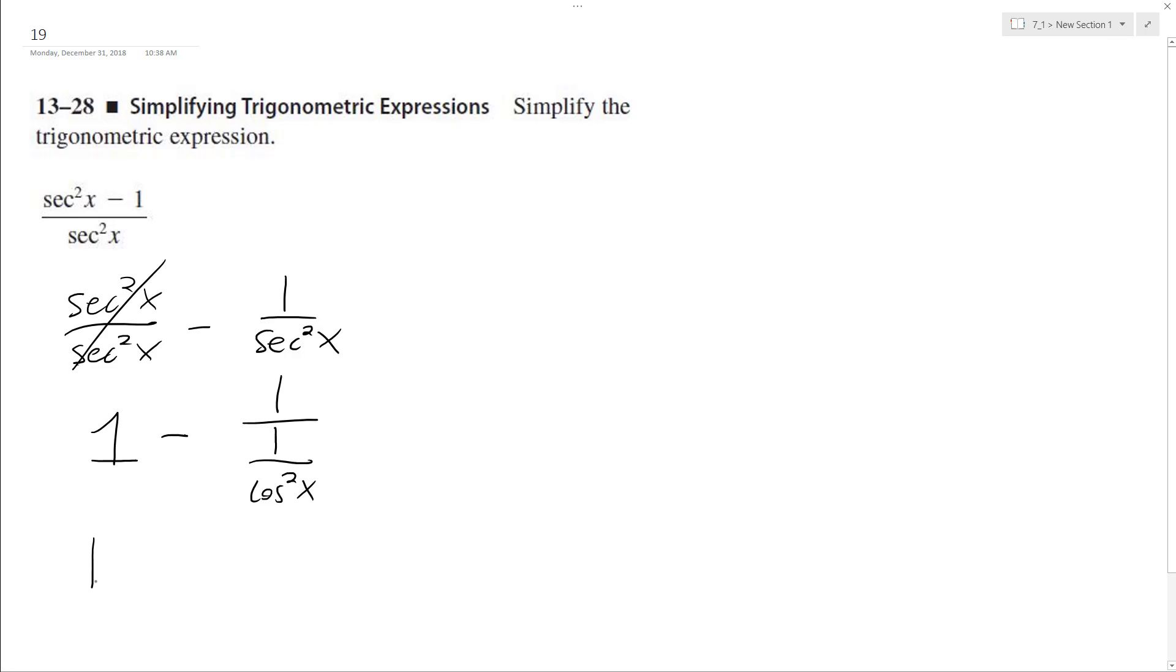And I can rewrite that as 1 minus 1 times cosine squared x over 1 because multiplying by the reciprocal. And we end up with 1 minus cosine squared of x.